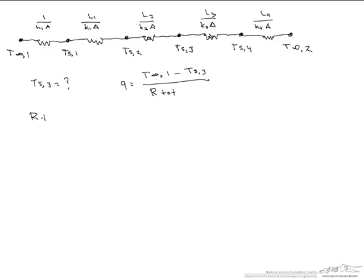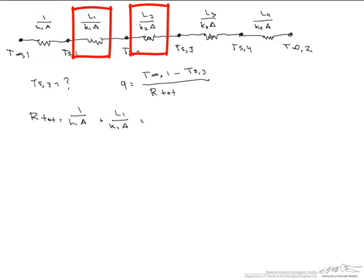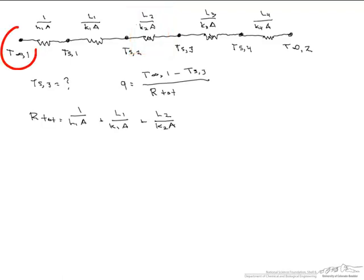Our total resistances here are 1 over H1A plus L1 over K1A plus L2 over K2A. Those are the resistances between T infinity 1 and TS3.